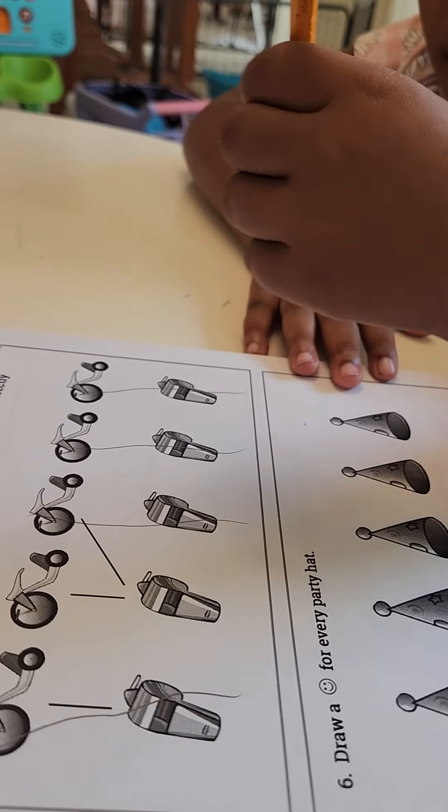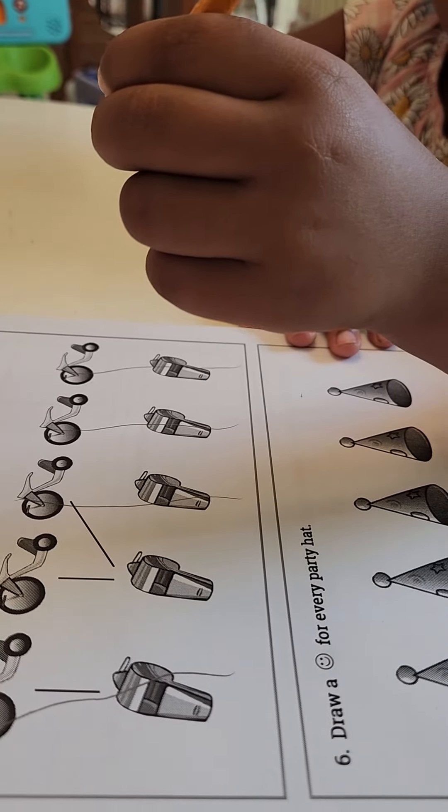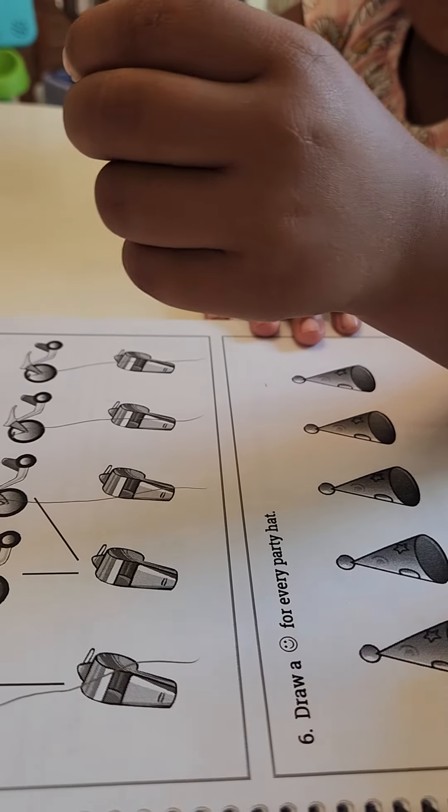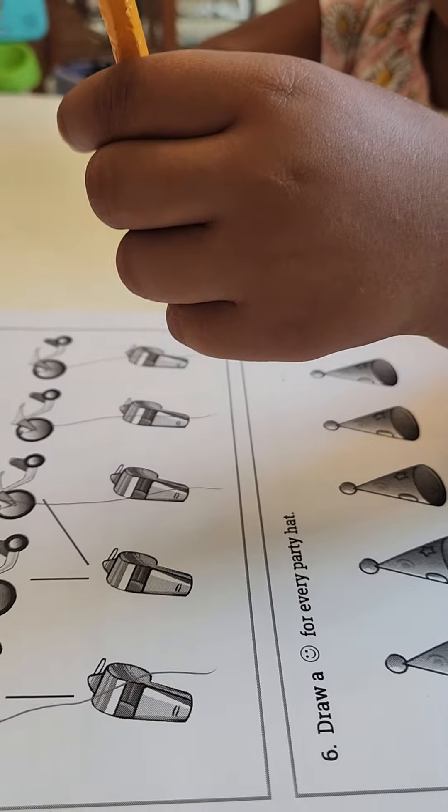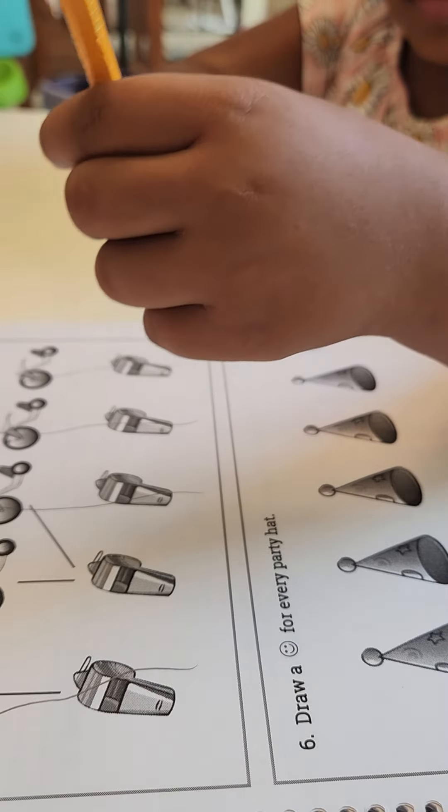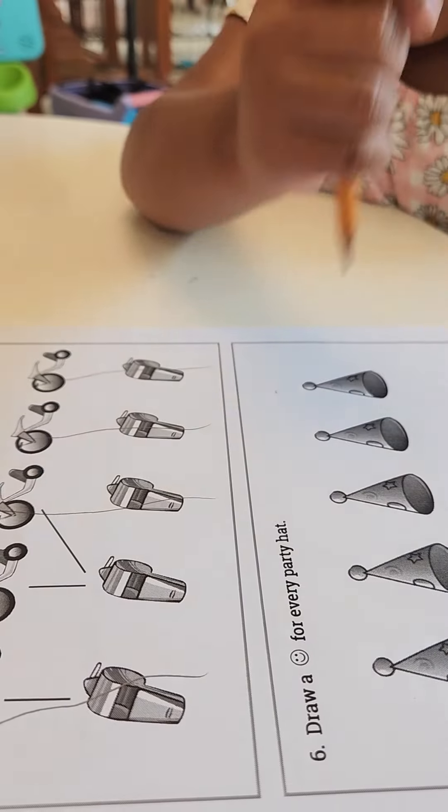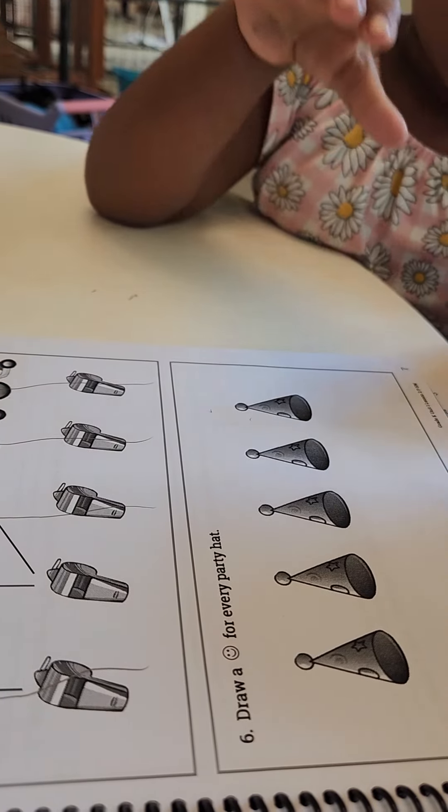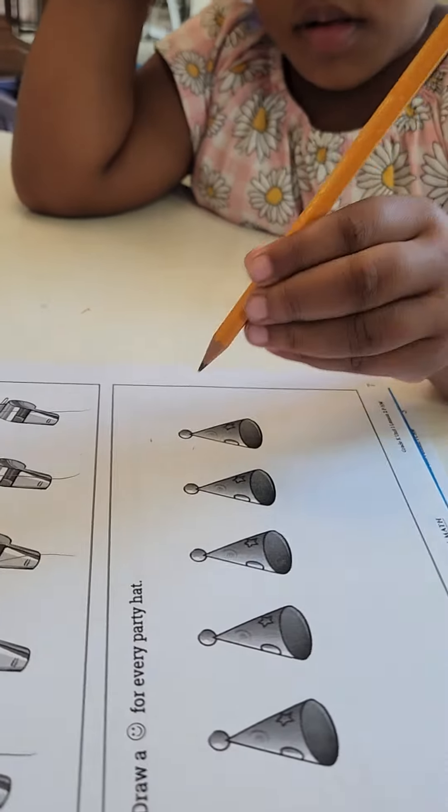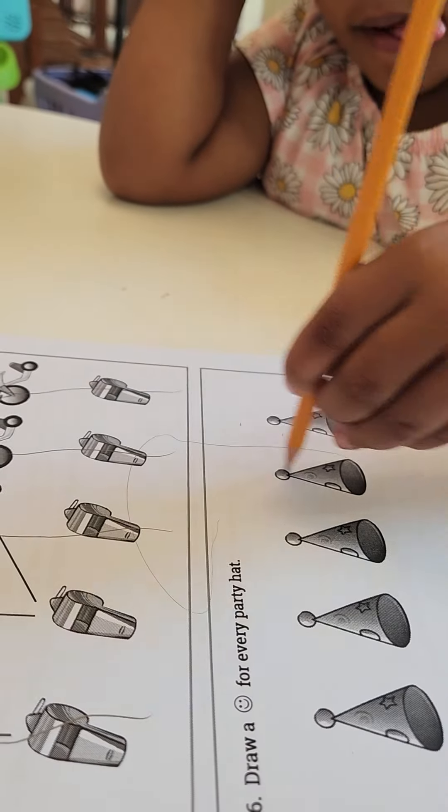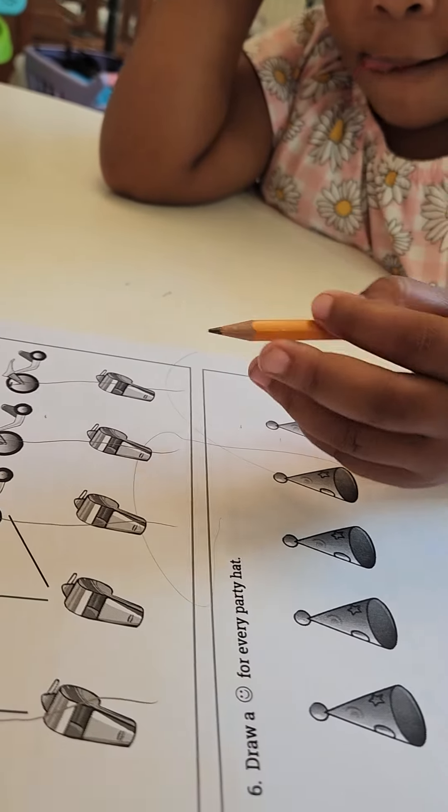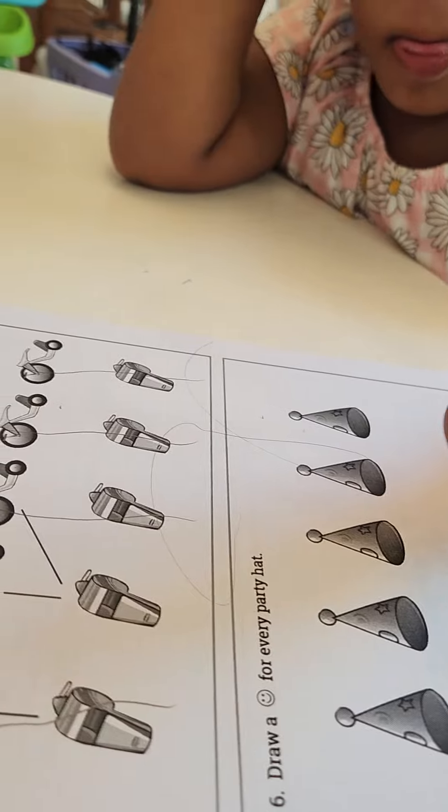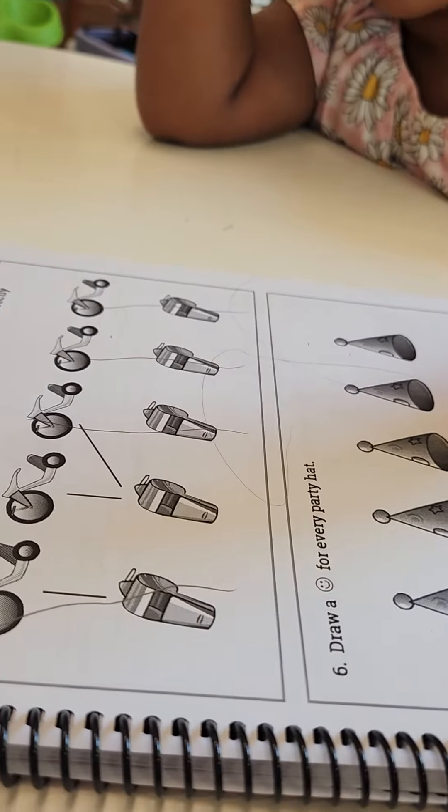Very good. Okay, so this one is draw a smiley face for every party hat. You know how to draw a smiley face? Let's draw a circle. Let's hold our pencil the right way. Uh-uh, that's loop-de-loops. I don't know what that is. So this is what a smiley face is.